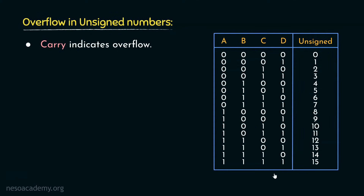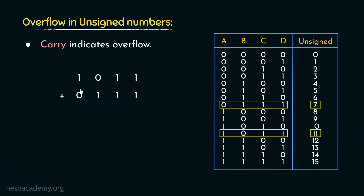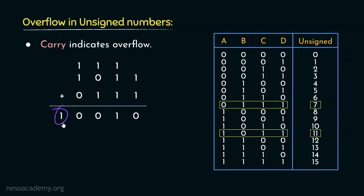For this instance, we are using 4-bit unsigned numbers. Let's choose 11, whose pattern is 1 0 1 1, and 7, whose pattern is 0 1 1 1. Performing the addition: 1+1 gives 0 carry 1; 1+1+1 gives 1 carry 1; 1+0+1 gives 0 carry 1; 1+1+0 gives 1 0. So we end up with a 5-bit result. Since 18 requires 5 bits, here the carry is the indication of overflow.